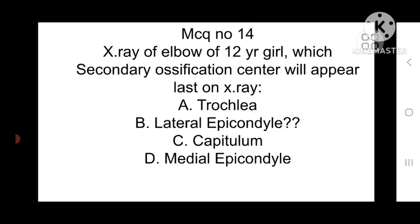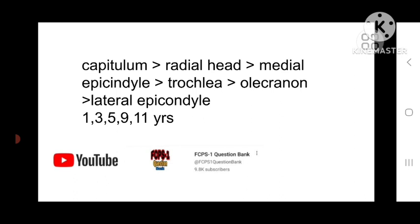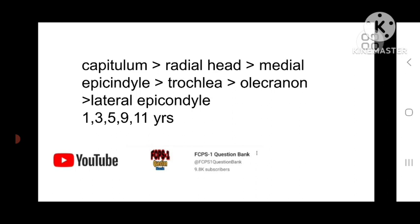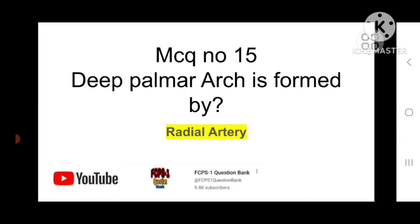MCQ number 14: On an x-ray of the elbow of a 12-year-old girl, which secondary ossification center appears last? Options: trochlea, lateral epicondyle, capitulum, medial epicondyle. The answer is the lateral epicondyle. The order of appearance is: capitulum, then radial head, then medial epicondyle, then trochlea, then olecranon process, and last is the lateral epicondyle — appearing at ages 1, 3, 5, 9, and 11 years.